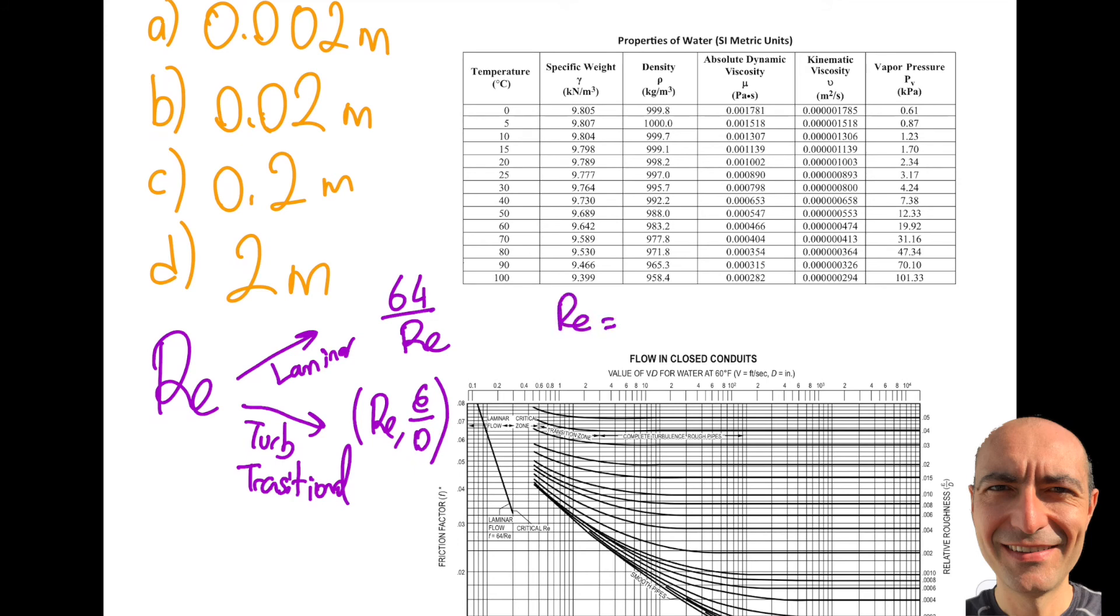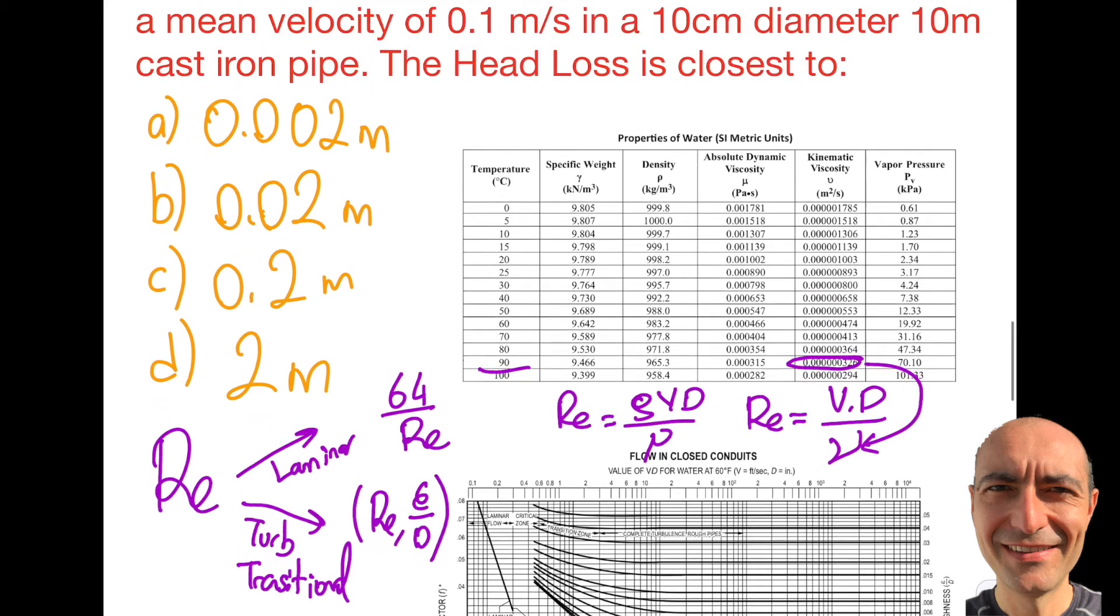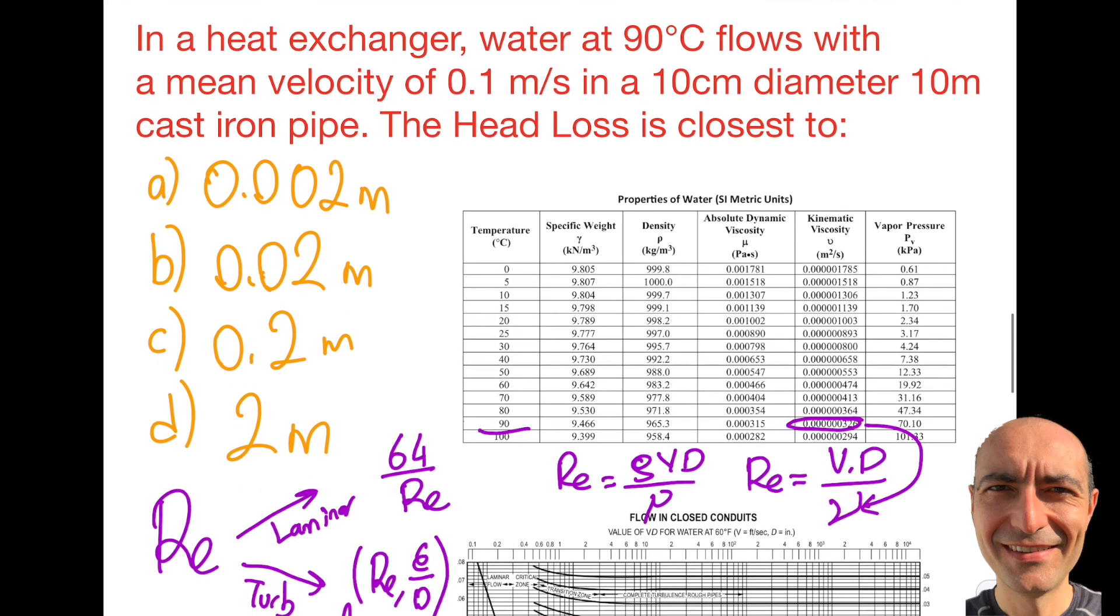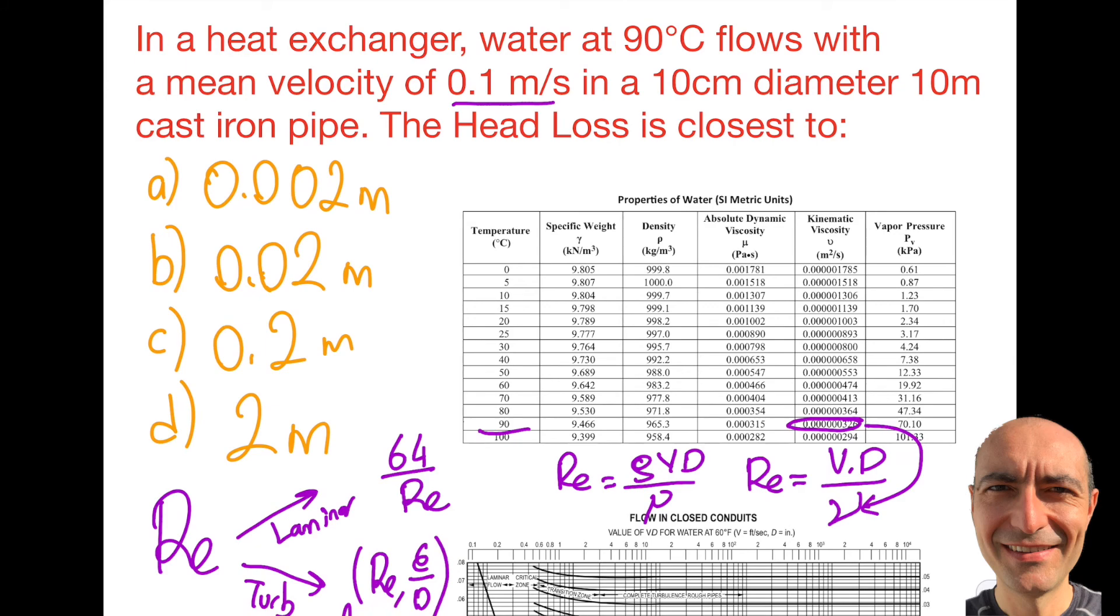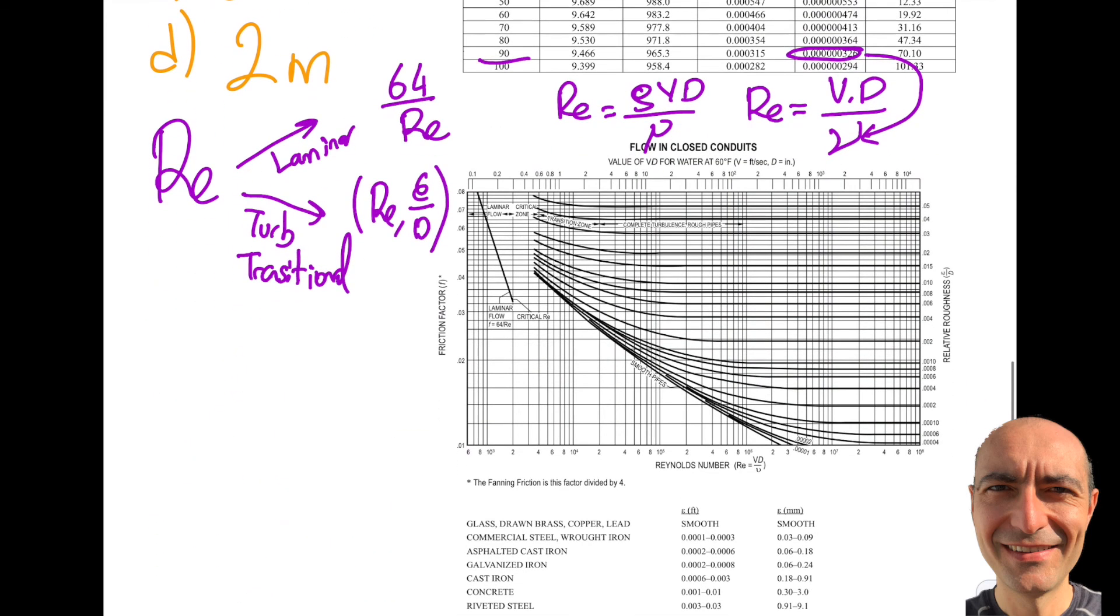If you remember, the Reynolds number has two definitions: rho v D over mu, the dynamic viscosity, or same thing, v D divided by kinematic viscosity. In this particular question I'm looking at 90 degrees, and I find my kinematic viscosity and put it over here. The velocity is given as 0.1 meter per second, I plug that right there, diameter is 0.1, I plug it, and I get myself the Reynolds number as right around 30,500. I don't have to be exact. As you can see, I'm going to read off of a chart. So now, what does this tell me?